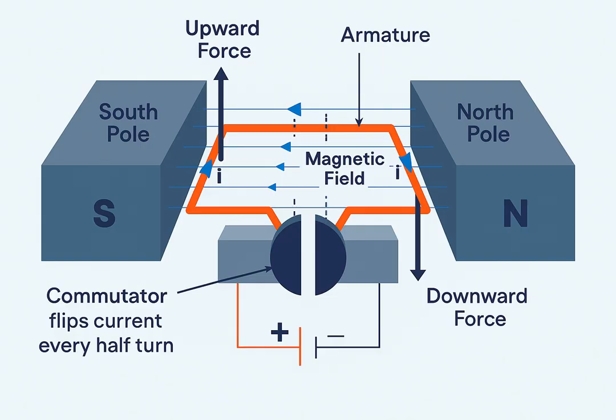Step 3: Commutator Reverses the Current Every Half Turn. As the rotor spins, the commutator plays a vital role. It automatically reverses the direction of current flowing through the rotor windings every half turn. This is essential because if the direction of current weren't reversed, the magnetic poles of the rotor would eventually align with the stator poles, and the torque would drop to zero, causing the motor to stop. By flipping the current at just the right moment, the commutator flips the polarity of the rotor's magnetic field, keeping the magnetic interaction active and the torque consistent.